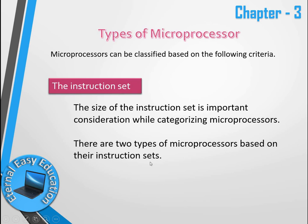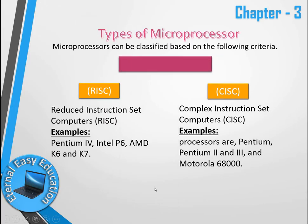Microprocessors can also be classified based on their instruction set. The size of the instruction set is an important consideration. There are two types: RISC (Reduced Instruction Set Computers) and CISC (Complex Instruction Set Computers). Examples of CISC processors include Pentium 4, Intel P6, AMD K6, and K7. RISC processors have reduced instructions, while CISC processors have complex instructions suited for research-level tasks.